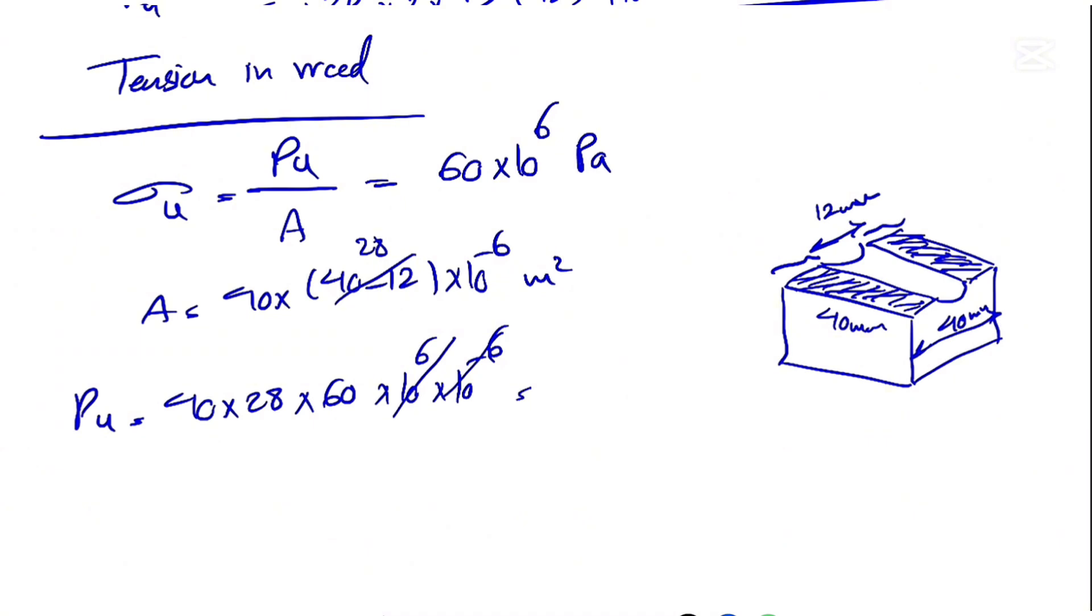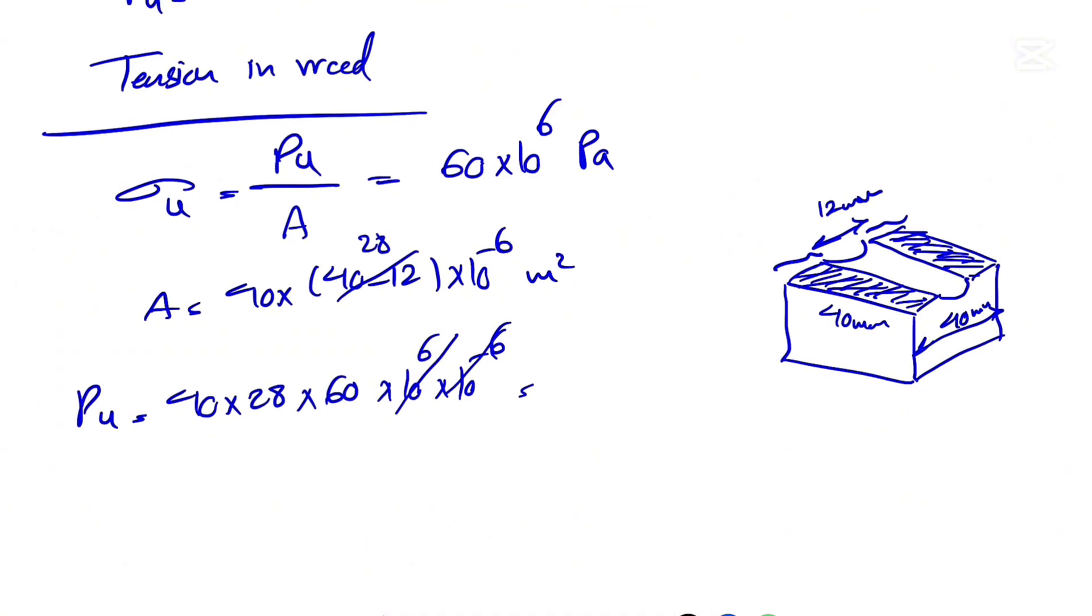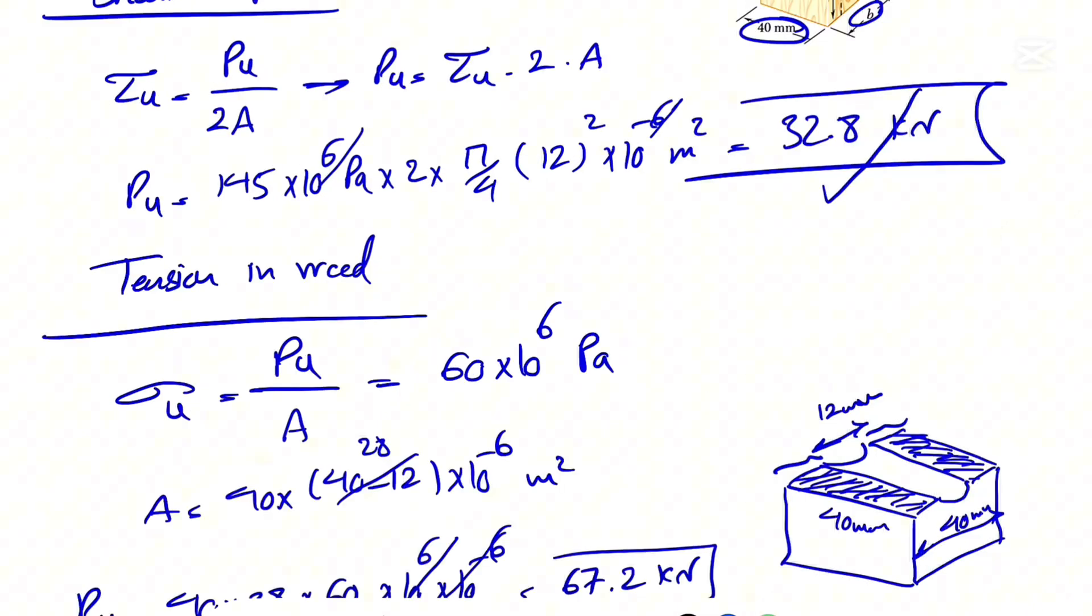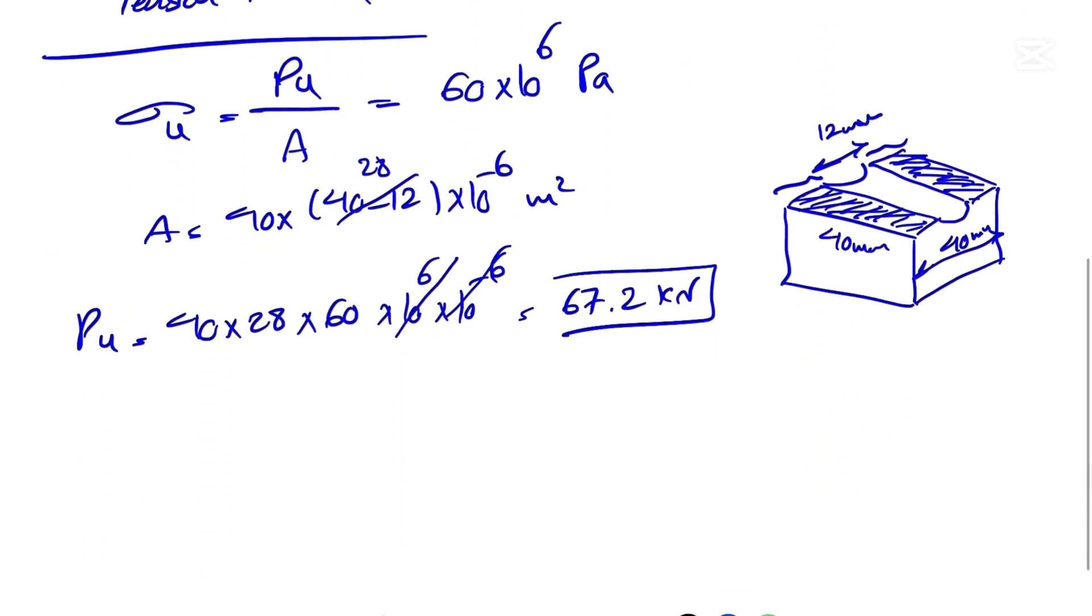So basically, 40 times this will be 28, times 60. The 10^6 and 10^-6 will be cancelled out. Let's see what we get for this: 40 times 60 times 28.